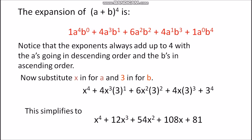For example, to expand (x + 3)^4, we substitute a = x and b = 3. The powers of b are 3^0 = 1, 3^1, 3^2, 3^3, 3^4. Simplifying, we get x^4 + 12x^3 + 54x^2 + 108x + 81.